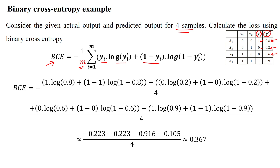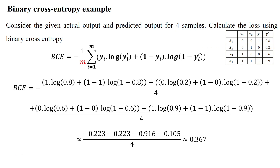When substituting values for the logarithm, we use the natural logarithm. For the first sample, the actual output is 1, so we compute 1 into the natural log of the predicted value 0.8, then 1 minus the actual output of the first sample is 1, which gives log of 1 minus the predicted output 0.8.